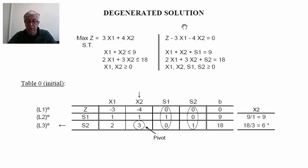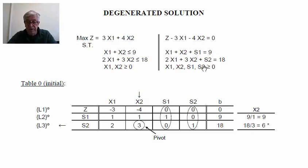Let's start with the case of the degenerated solution. We are going to illustrate this situation using a simple linear programming problem involving two variables and two restrictions of the type less or equal. We are going to solve this problem using the simplex method, but we are going to present also the graphical solution. To solve this problem using the simplex method, we need to transform the restrictions into equalities by introducing two slack variables s1 and s2. We also rewrite the objective function putting all terms on the left-hand side. This allows us to build the initial table of the simplex method.